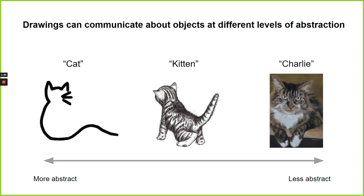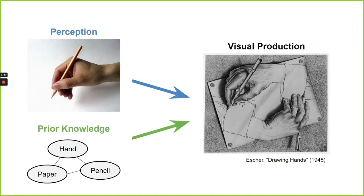What cognitive mechanisms underlie our ability to communicate object information at different levels of abstraction? We hypothesize that when we produce a drawing — take for example a hand holding a pencil — there are two key cognitive mechanisms at play: visual perception, how the brain transforms the light coming in through our eyes into visual experience, and prior knowledge about objects and their relationships with other objects, for example our knowledge of hands and how they relate to pencils. We hypothesize that part of what allows us to draw things at different levels of abstraction stems from the relative contributions of visual perception and prior knowledge.